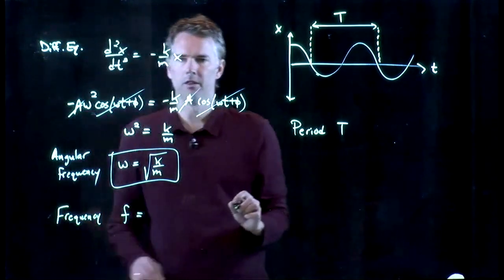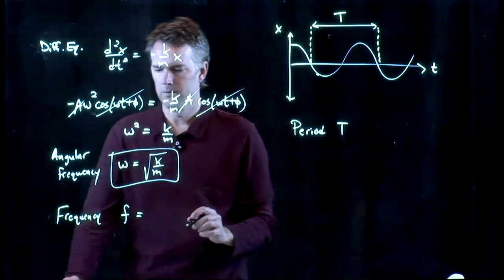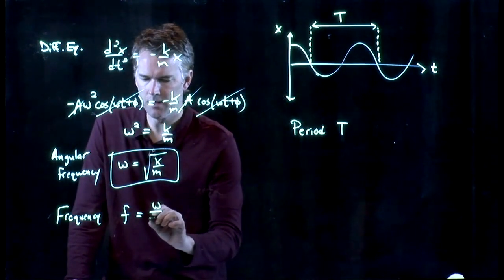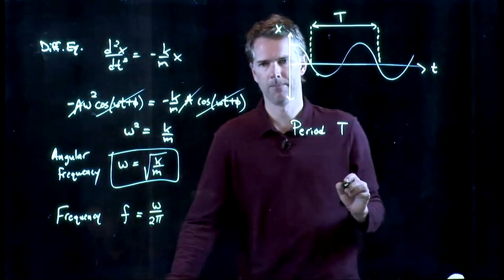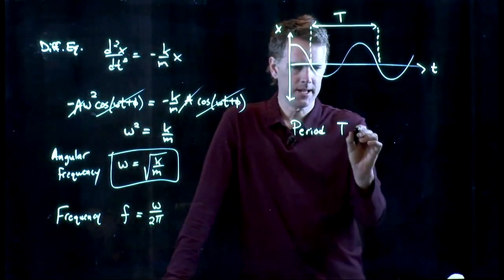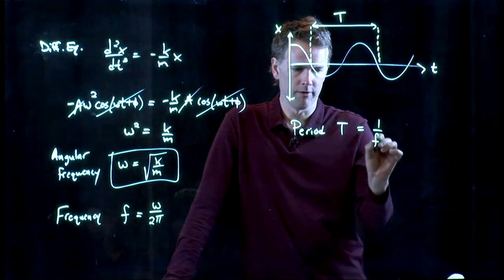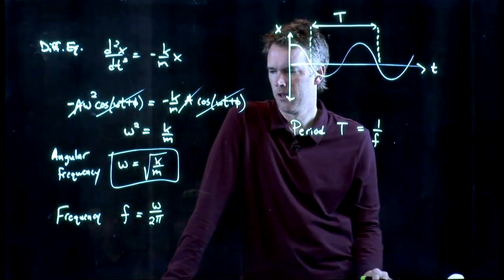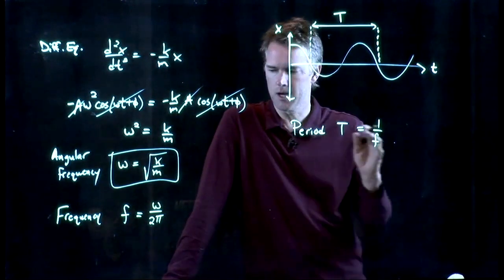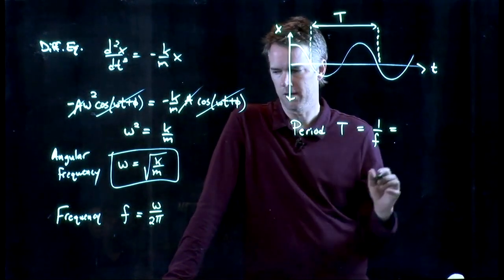What is the frequency? Well, the frequency is omega over 2 pi, and the period T is 1 over the frequency. And so in our case with the block on the spring, we can plug all this in.